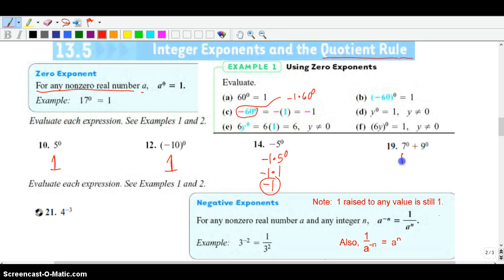You've got 7 to the 0, which is 1, plus 9 to the 0, which is 1. 1 plus 1 is 2. And so that's it for that part.